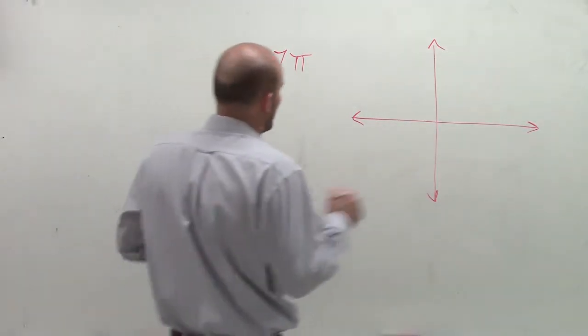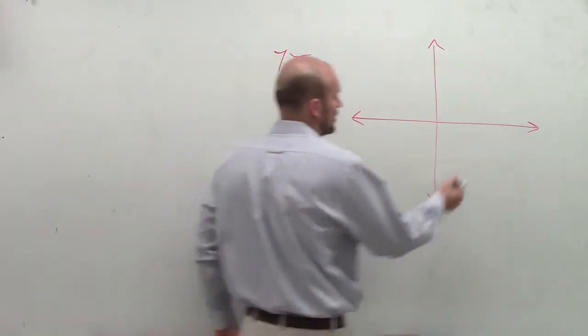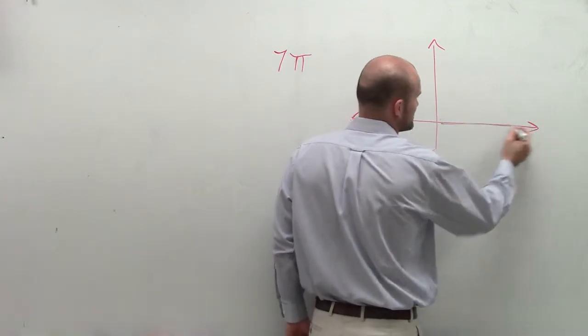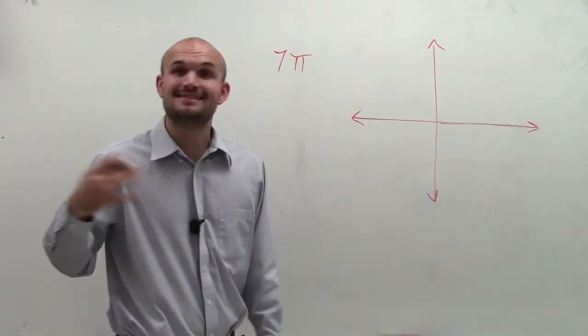But let's remember, how do I graph 7 pi? Well, first of all, where do I start? There's my initial side, right? And wherever I end is going to be my terminal side.